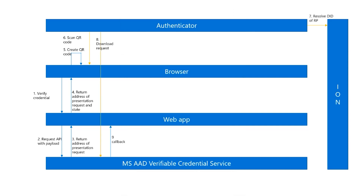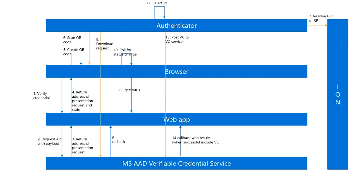The authenticator downloads the request, we give a callback to the web app. The browser keeps polling for changes via the get-status API. The user selects the verifiable credential and presents it to our service. The callback hits our web app again, now with the result of the validation of the verifiable credentials — we do the validation and verification of the signatures. The browser, still polling for any change, can now show the payload from the verifiable credential in our sample. And that's it.